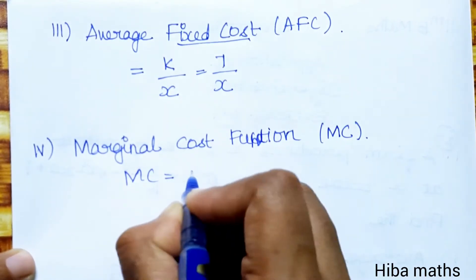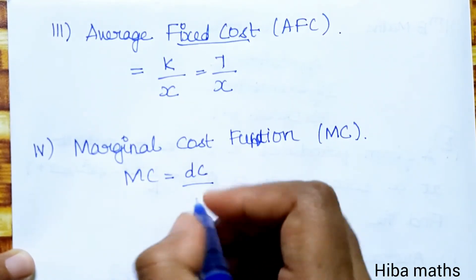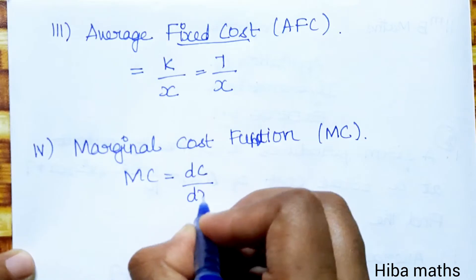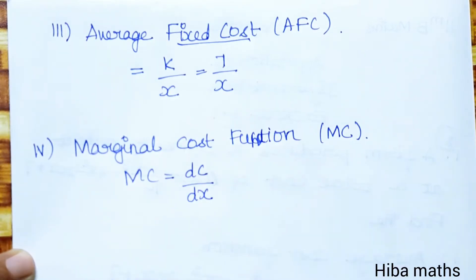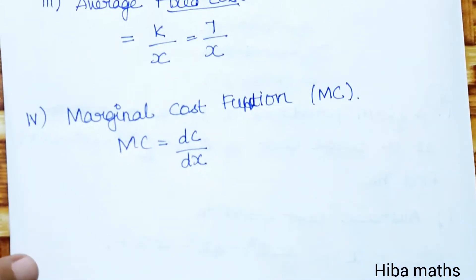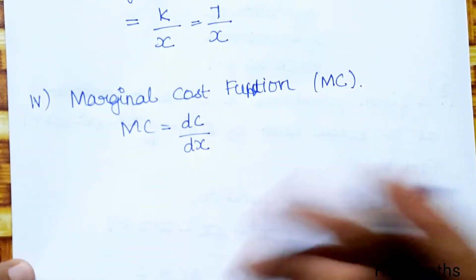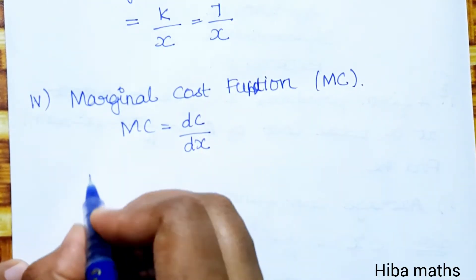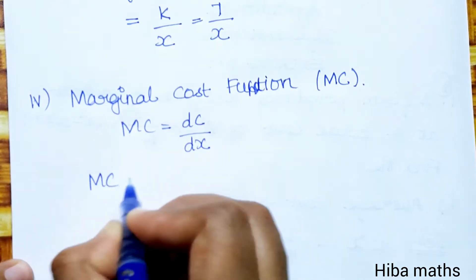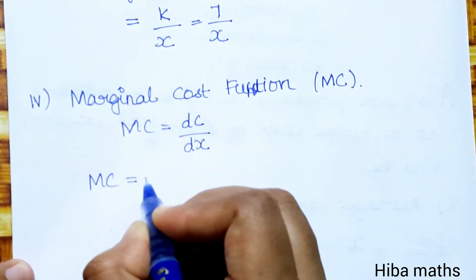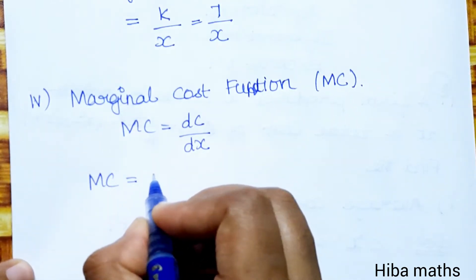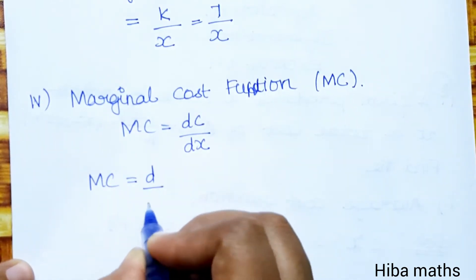Marginal cost function, denoted MC. MC is the differentiation of total cost with respect to x. MC equals d/dx of the total cost function.